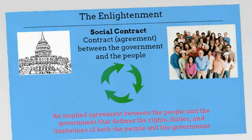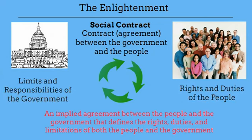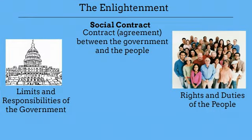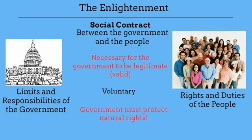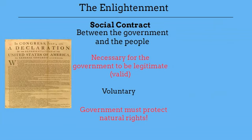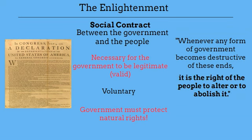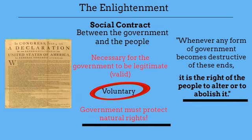A social contract isn't something you sign — it is created when the government and the people agree on their rights, duties, limits, and responsibilities. In Locke's view, this contract must be in place for the government to be legitimate in the eyes of the people. He argued that people form a social contract with the government voluntarily, only on the condition that the government protects natural rights. Thomas Jefferson incorporated this idea into the Declaration of Independence, writing: "Whenever any form of government becomes destructive of these ends, it is the right of the people to alter or to abolish it" — in other words, to leave the contract. Jefferson's argument was that the British government was breaking this voluntary social contract by not protecting the citizens' natural rights, so the Americans had the right to abolish that contract.